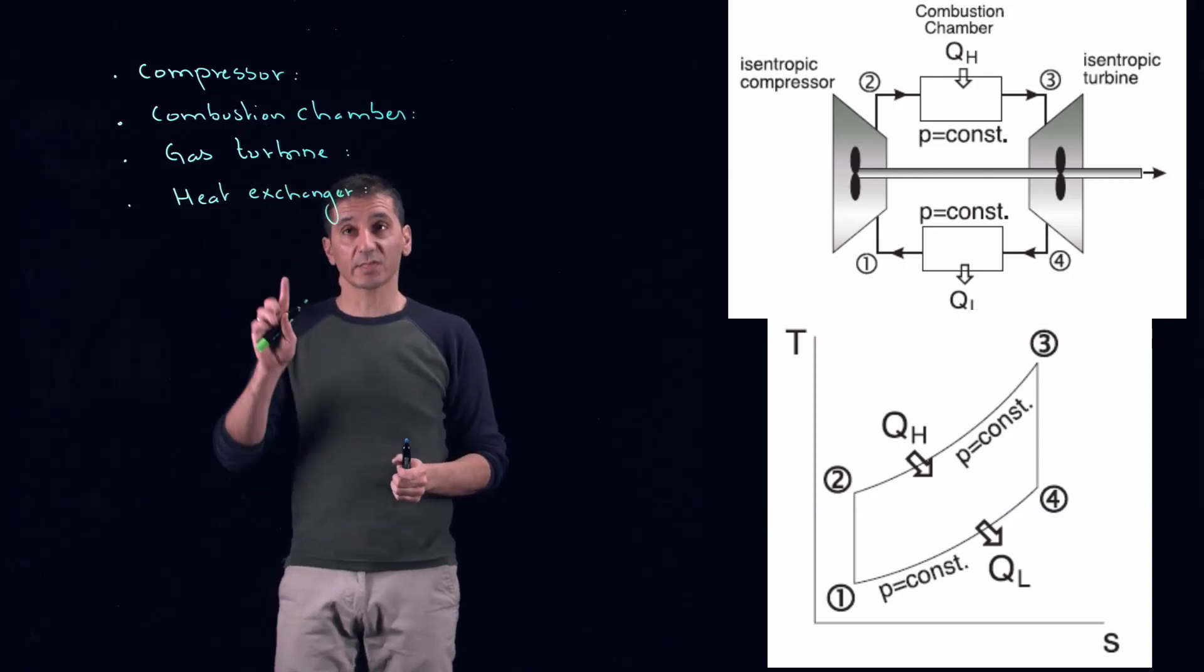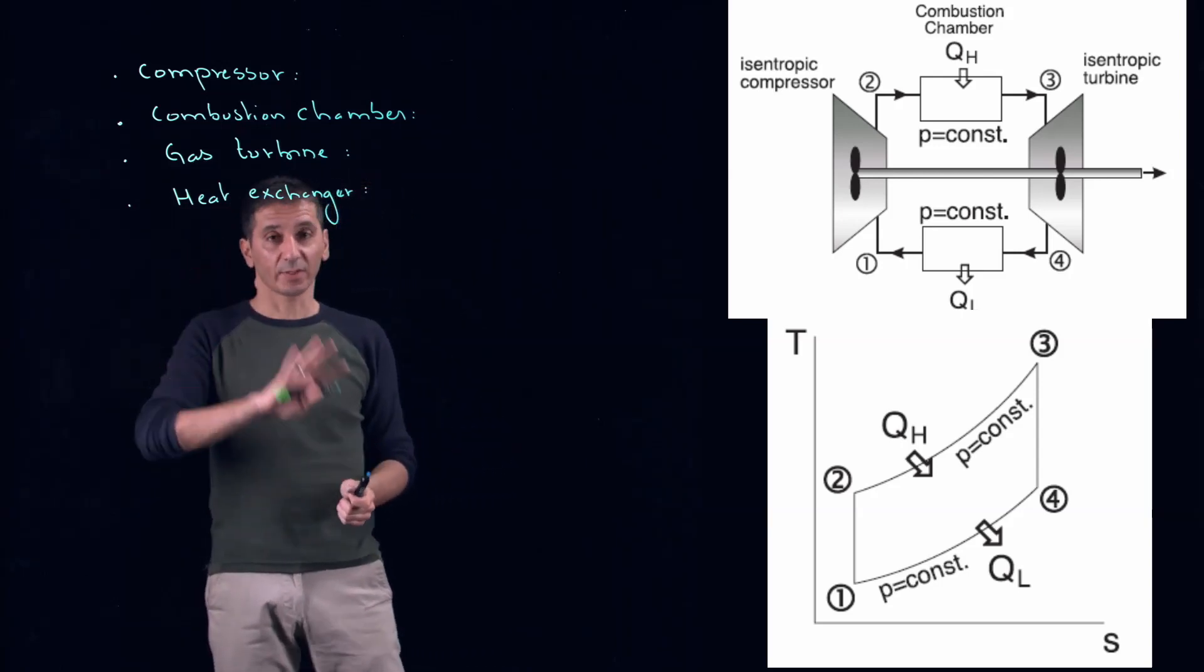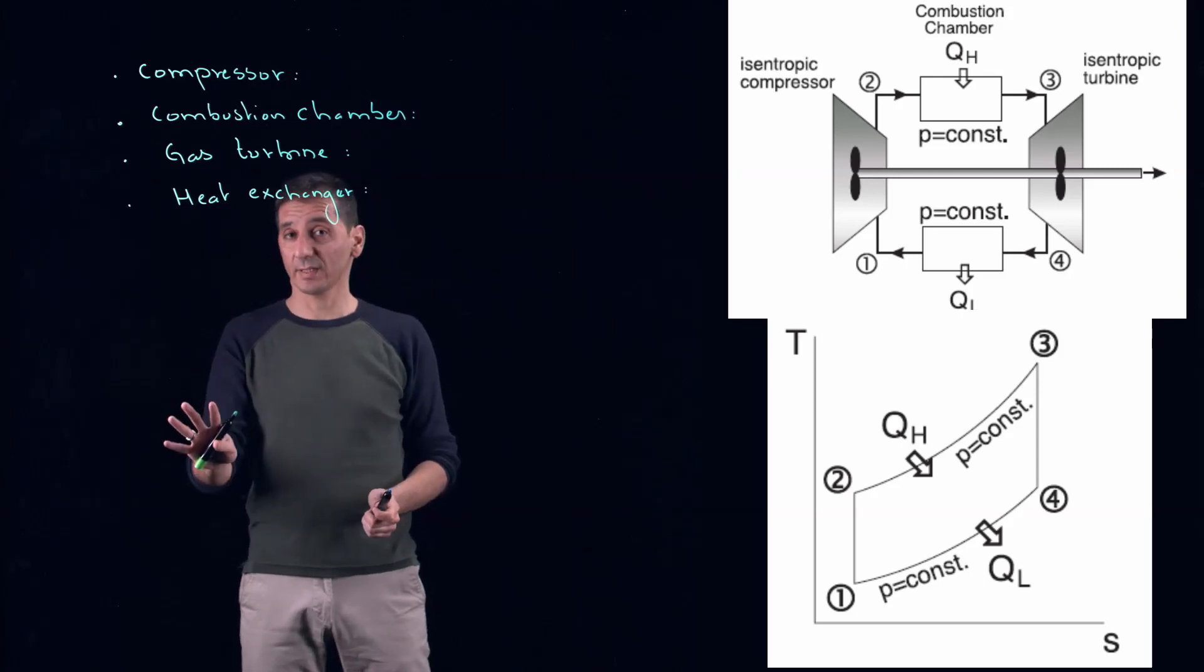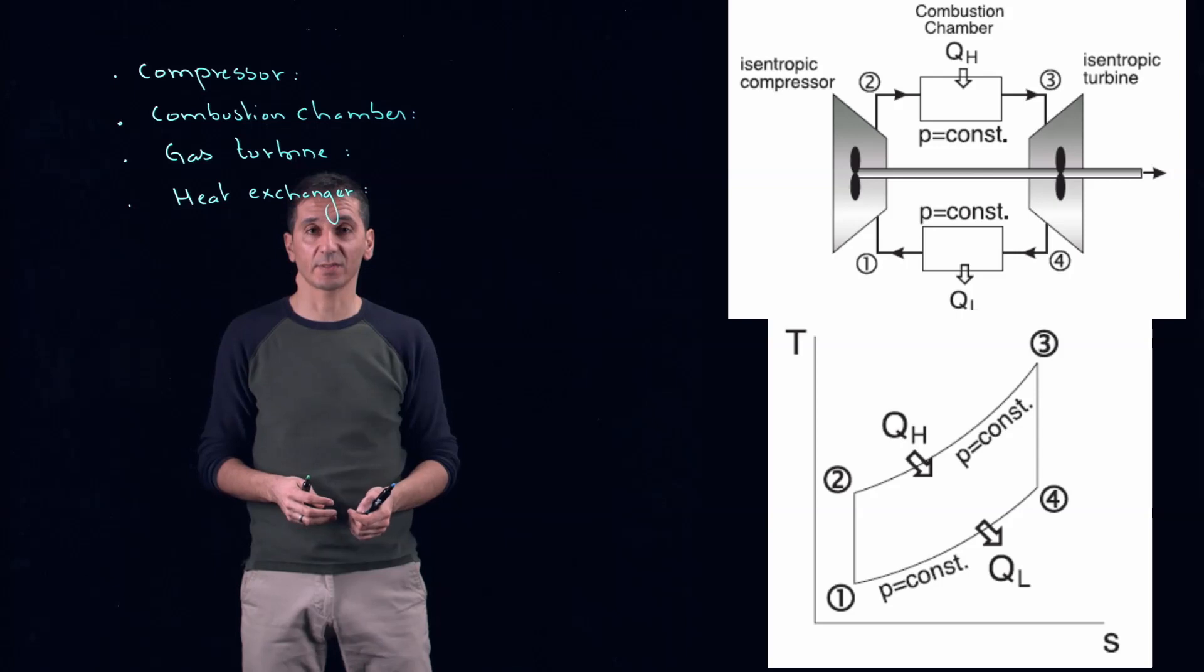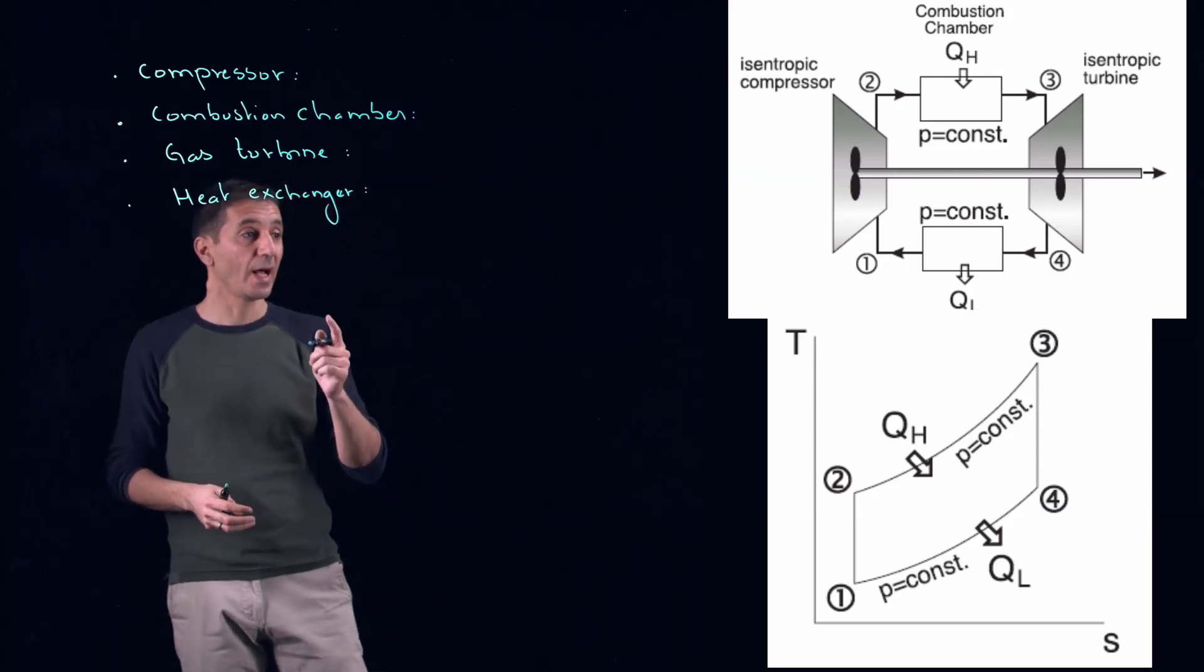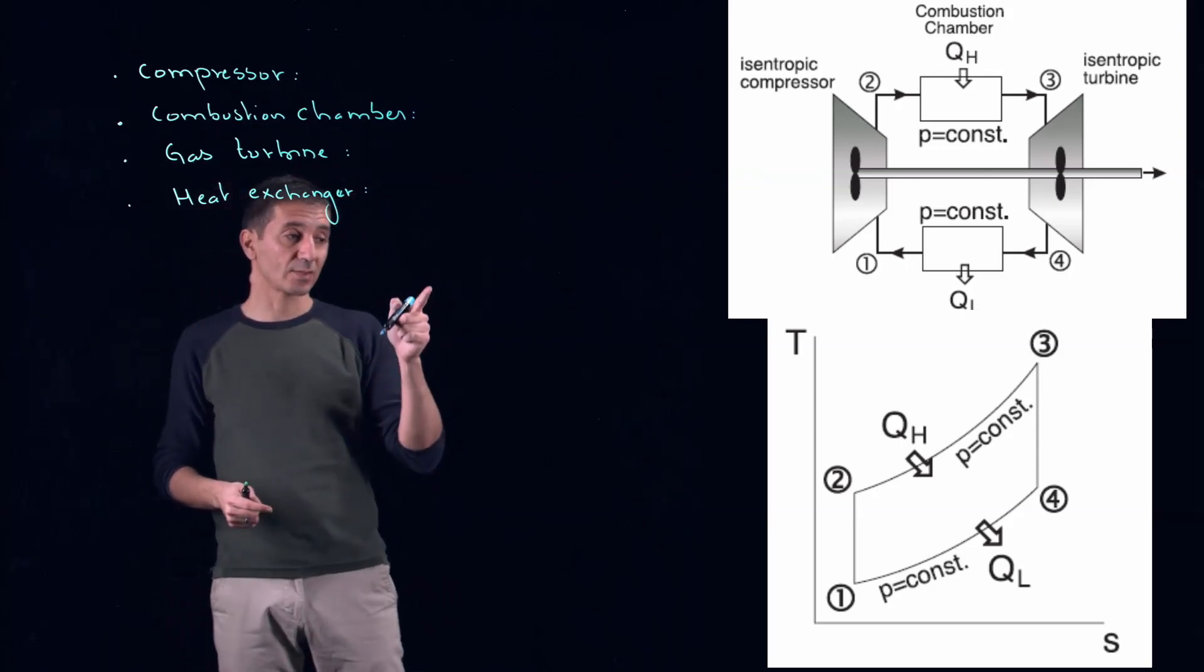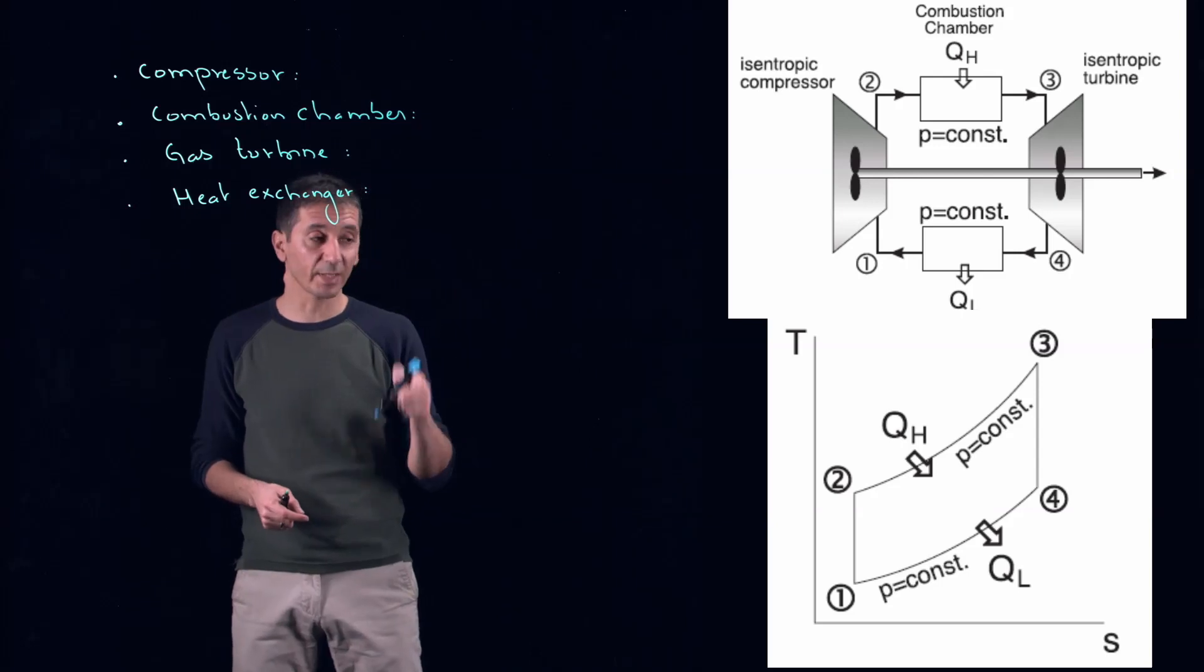So, first you see that we are using a compressor, not a pump. Why? Because here we are using air. So, therefore, we will have to use a compressor instead of a pump. And the process through the compressor is isentropic from one to two.